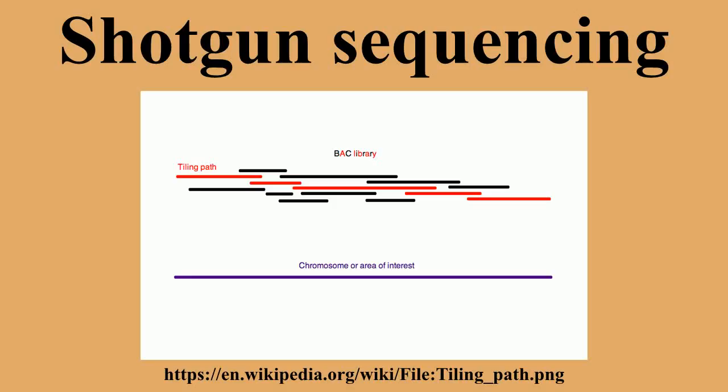Two principal methods are used for this: primer walking, which progresses through the entire strand piece by piece, and shotgun sequencing, which is a faster but more complex process that uses random fragments.